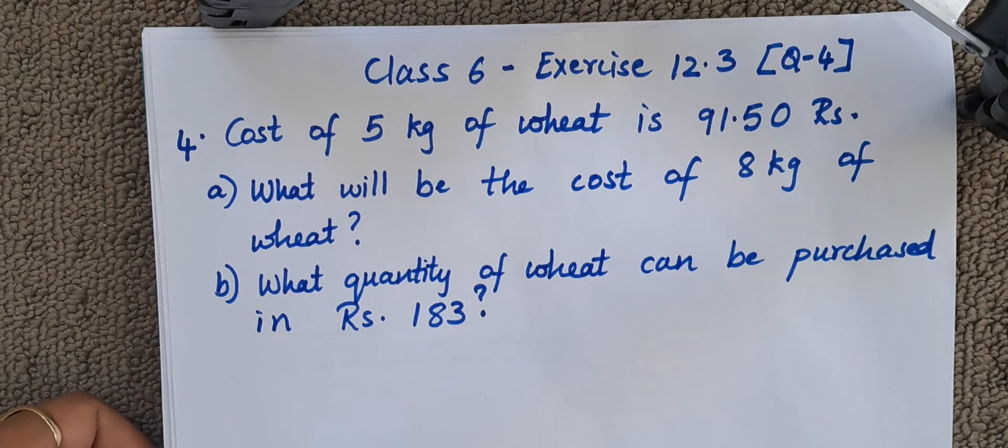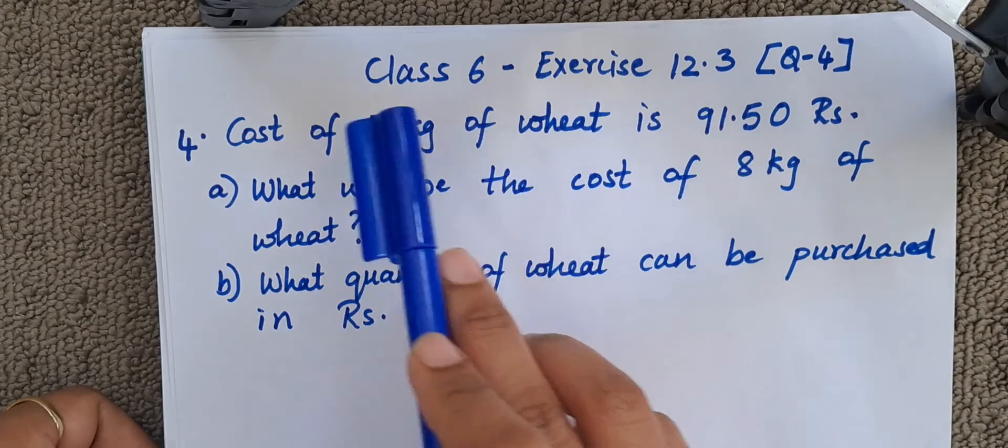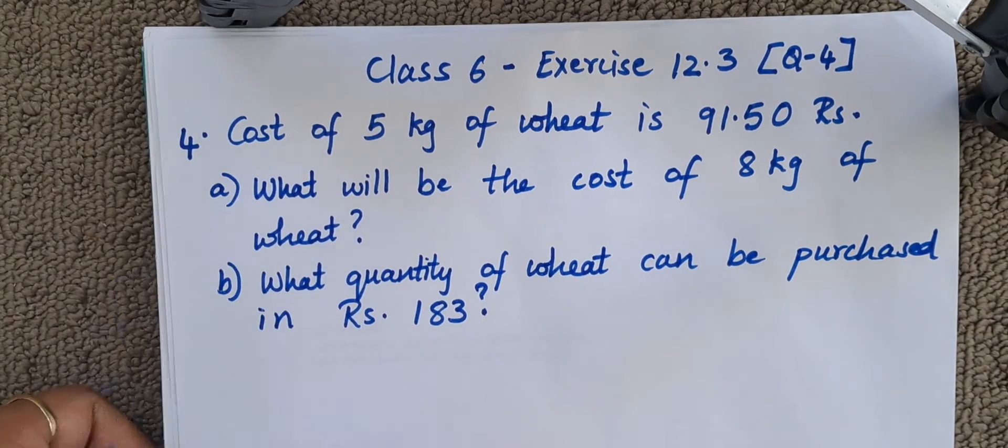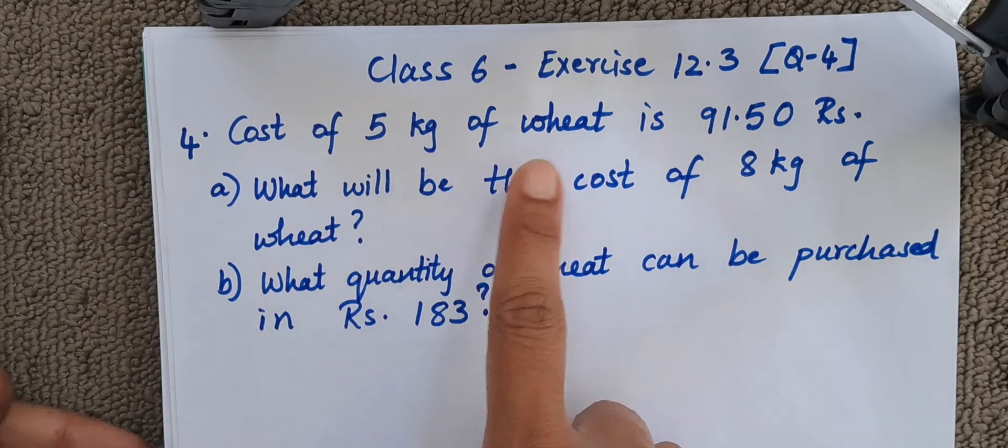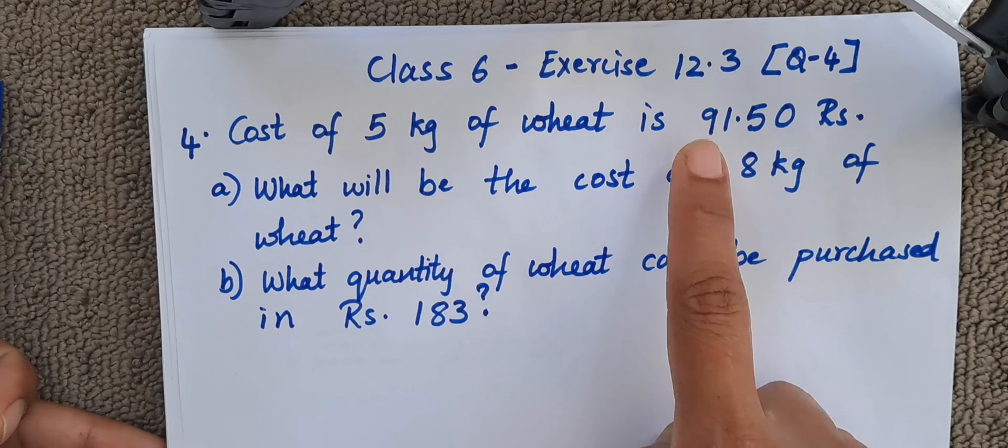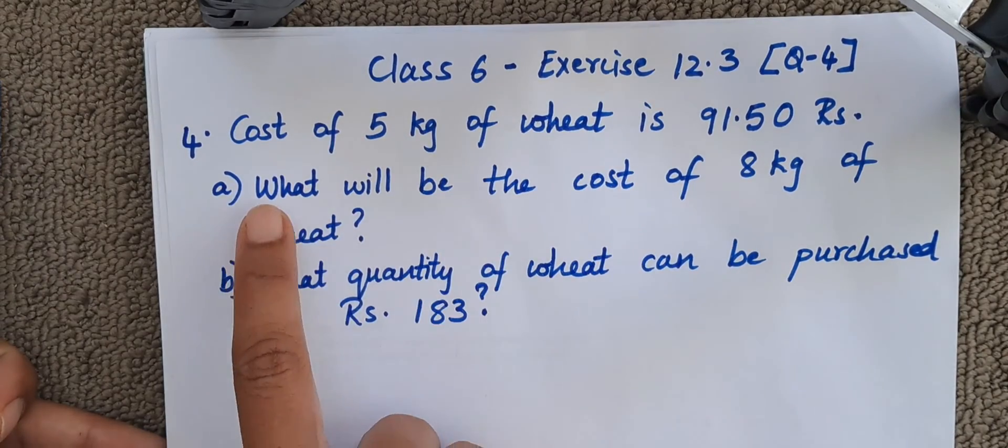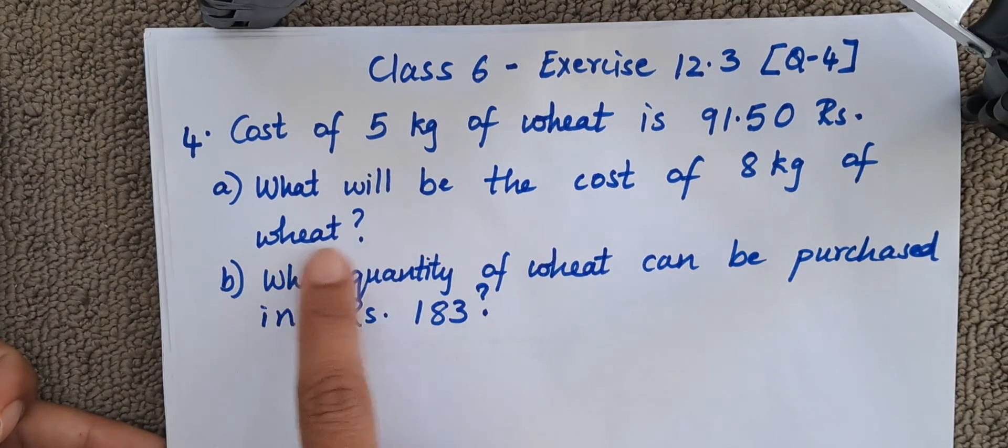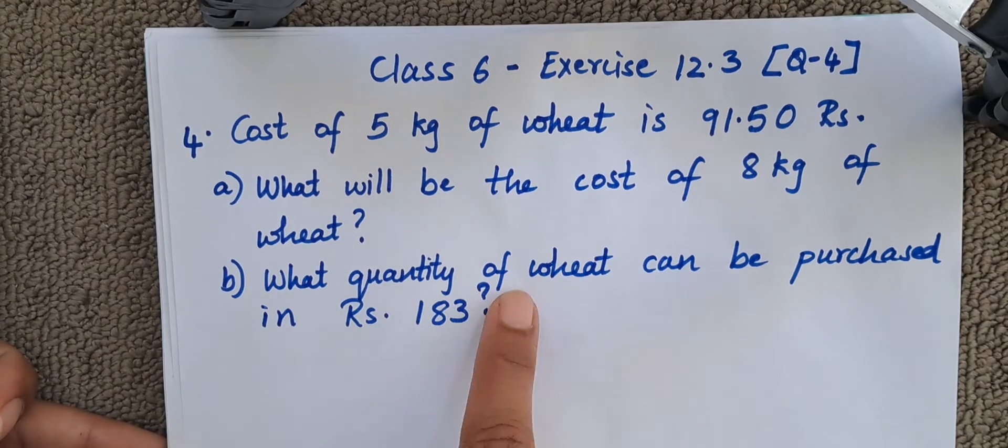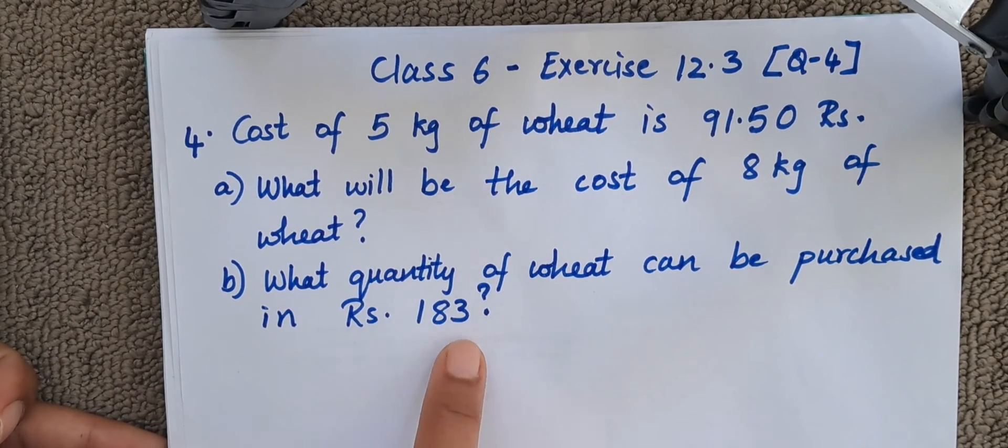Hello everyone, today we are going to do question 4 of exercise 12.3 class 6. The question goes like this: cost of 5 kg of wheat is 91.5 rupees, that is 91 rupee and 50 paisa. What will be the cost of 8 kgs of wheat? And one more question here, what quantity of wheat can be purchased in rupees 183?